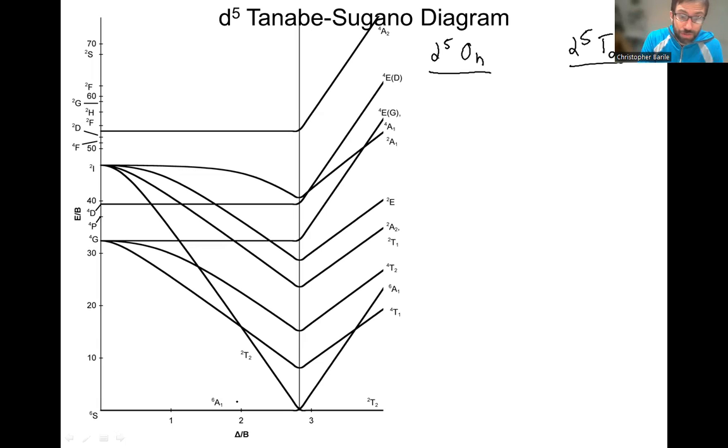To review the attributes, the axes of the Tanabe-Sugano diagram: we have the energy axis here. This is the energy of the transition going from zero, which is the ground state, to all these excited states, and it's in terms of B, which is the Racah parameter, a measure of electron-electron repulsion.